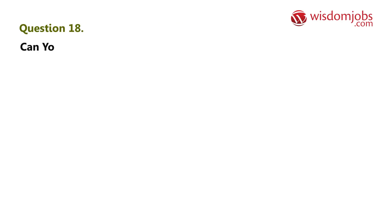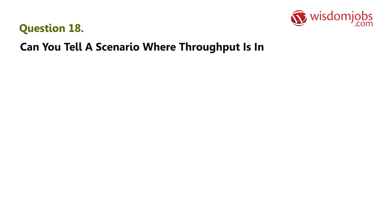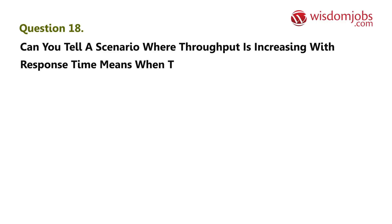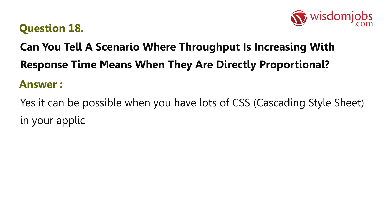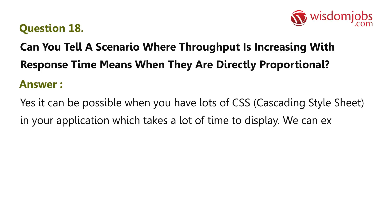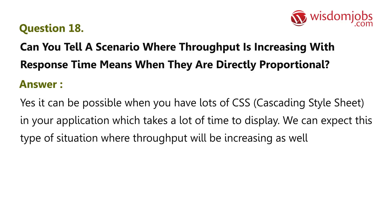Question 18: Can you tell a scenario where throughput is increasing with response time — i.e., when they are directly proportional? Answer: Yes, it can be possible when you have lots of CSS in your application which takes a lot of time to display. We can expect this type of situation where throughput will be increasing as well as the response time.